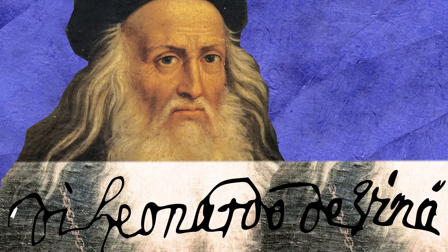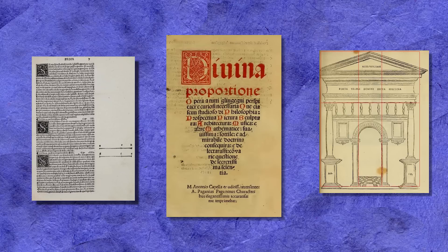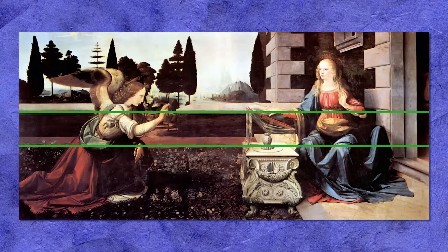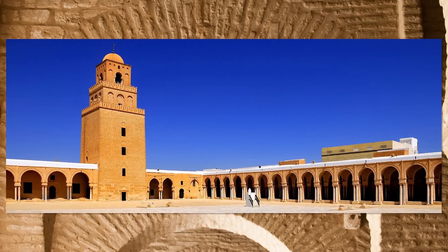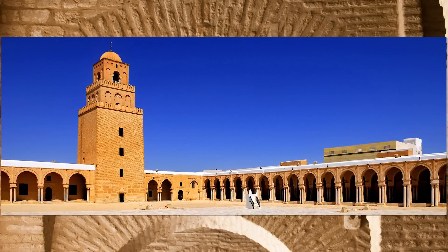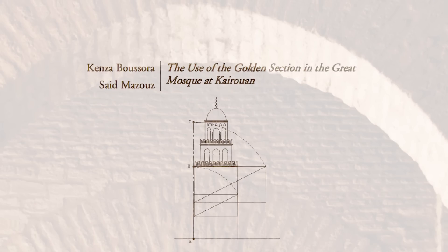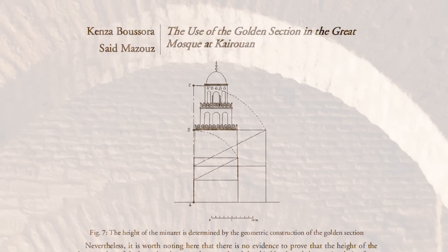Leonardo da Vinci certainly knew about it, illustrating a book called De Divina Proporzione, The Divine Proportion, by Luca Pacioli, published in 1509, and there's some evidence that some of his paintings are structured around the Golden Section, although this is all hotly debated. In architecture, the Great Mosque of Kairouan in Tunisia, built in 670 AD, seems to have a consistent use of Golden Section proportions throughout.